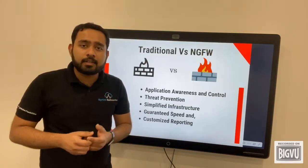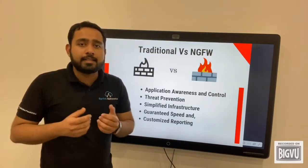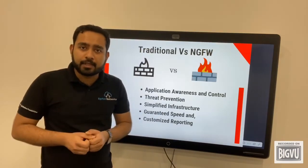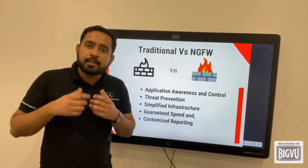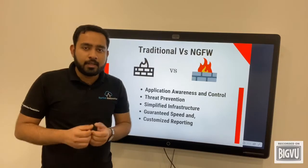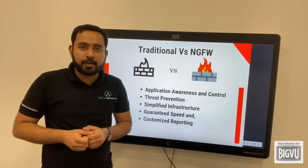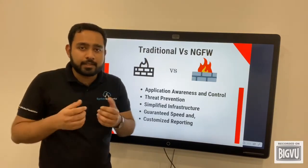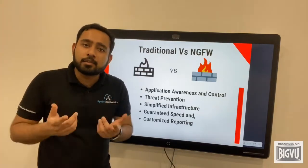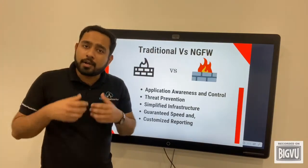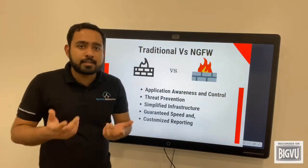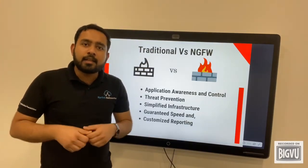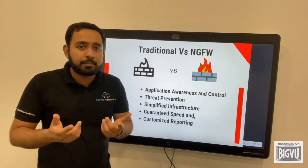Then we have guaranteed speed. Traditional firewalls can throttle the speed coming through the network — the more protection services added on, the more speed is lost heading out to end users. The throughput on a next-generation firewall doesn't change regardless of how much protection is enabled. The speed coming in goes straight back out.